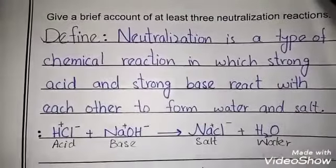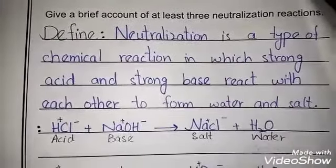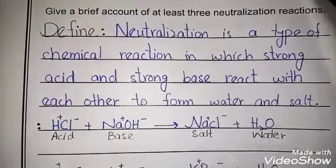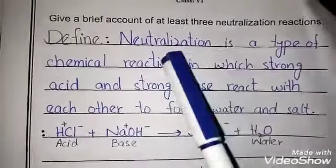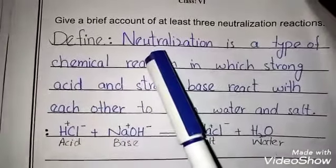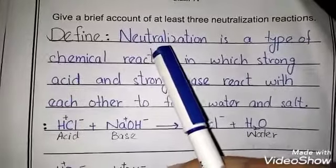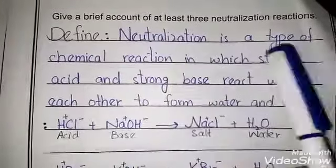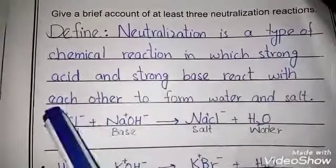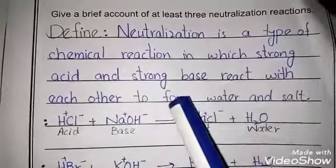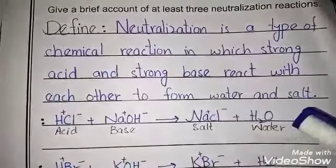We have three neutralization reactions. First we will see neutralization reactions. Neutralization is a type of chemical reaction in which a strong acid and a strong base react with each other to form water and salt.